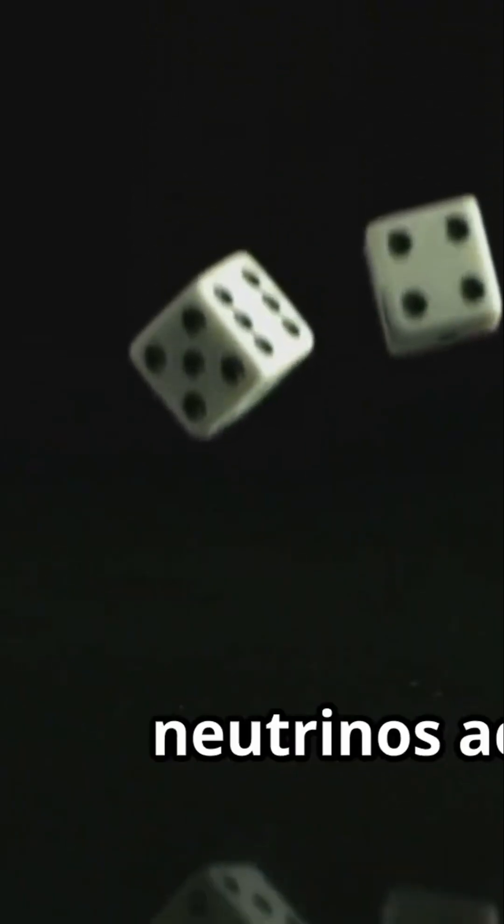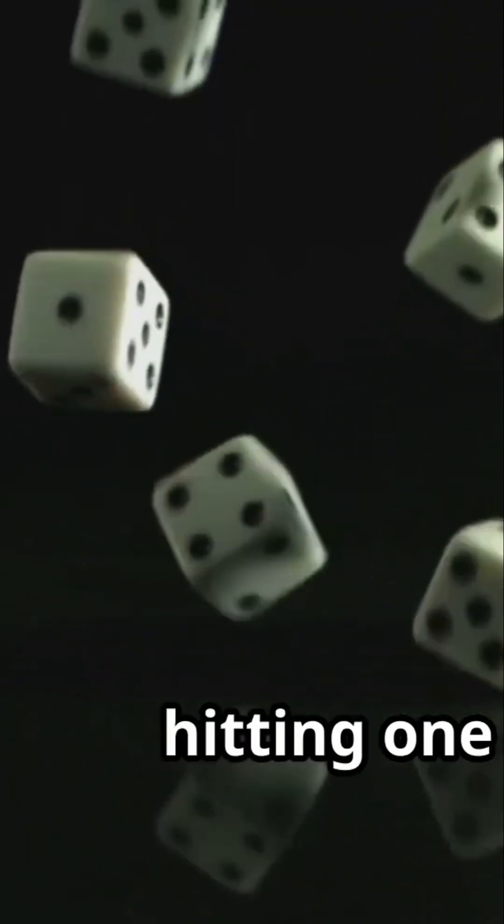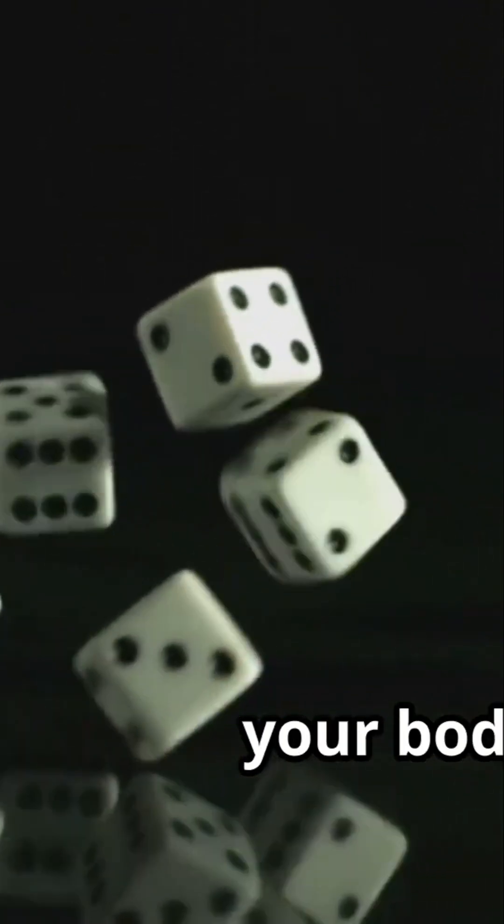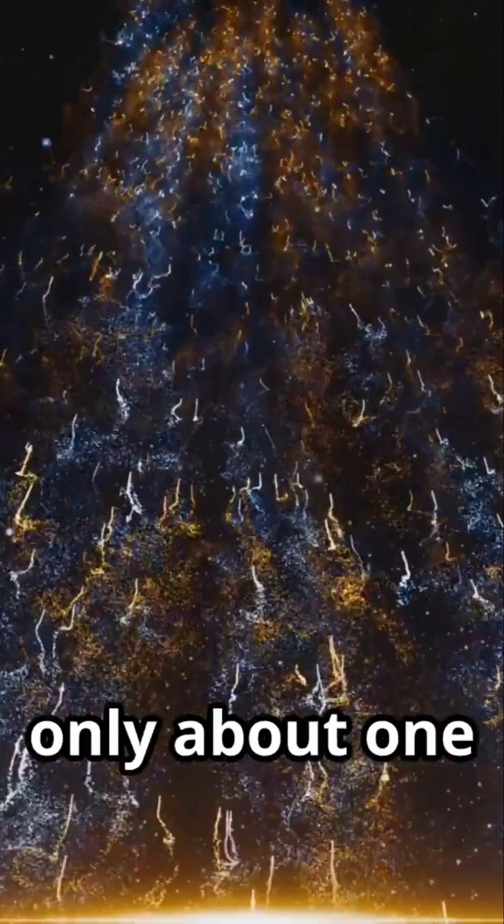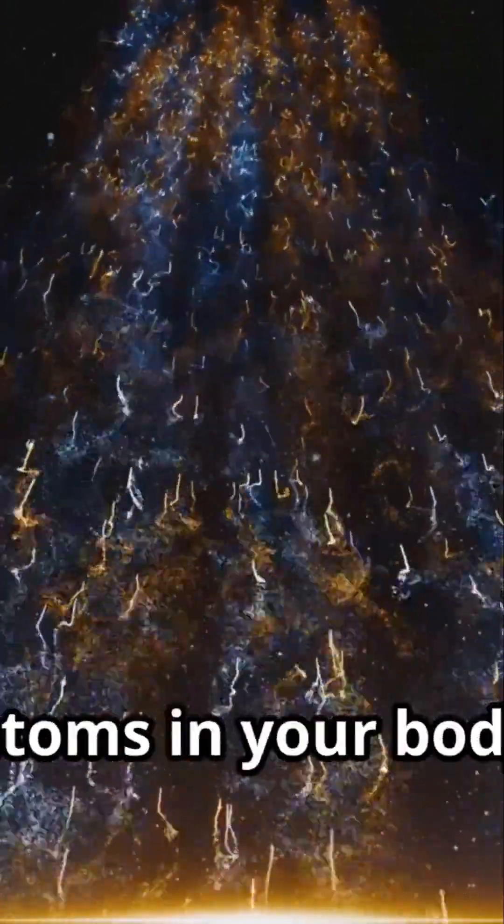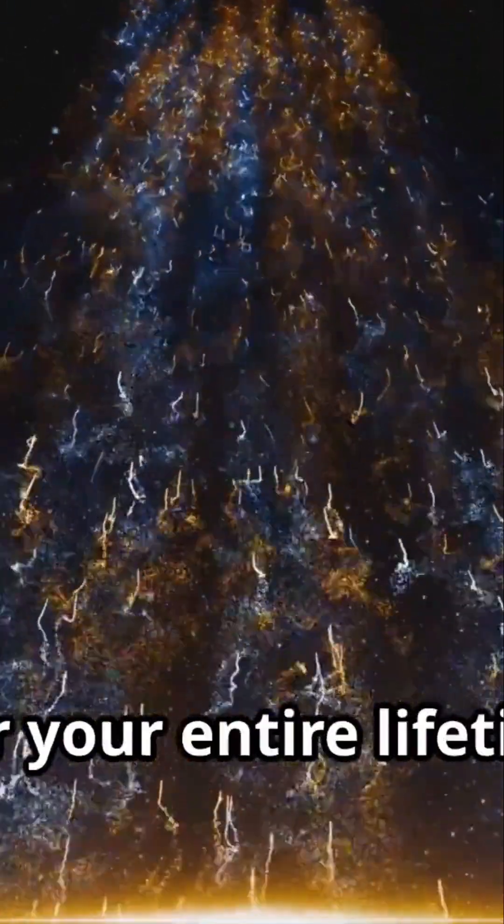This is why trillions of neutrinos can pass through your body every second without you ever feeling a thing. The probability of one of those neutrinos actually hitting one of the atomic nuclei in your body is infinitesimally small. On average, only about one solar neutrino will interact with the atoms in your body over your entire lifetime.